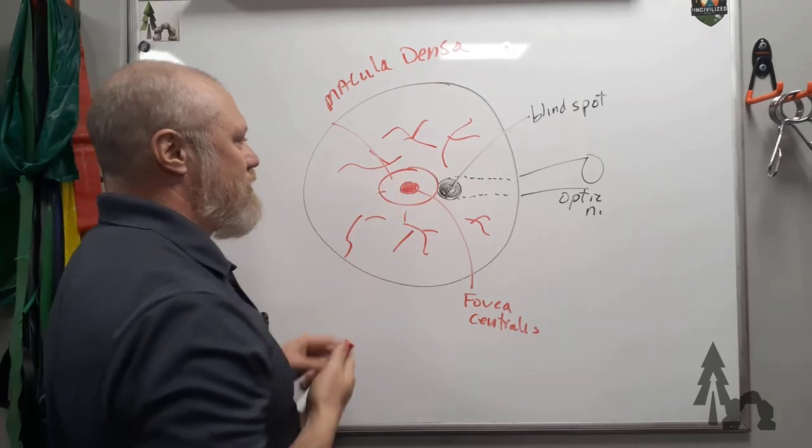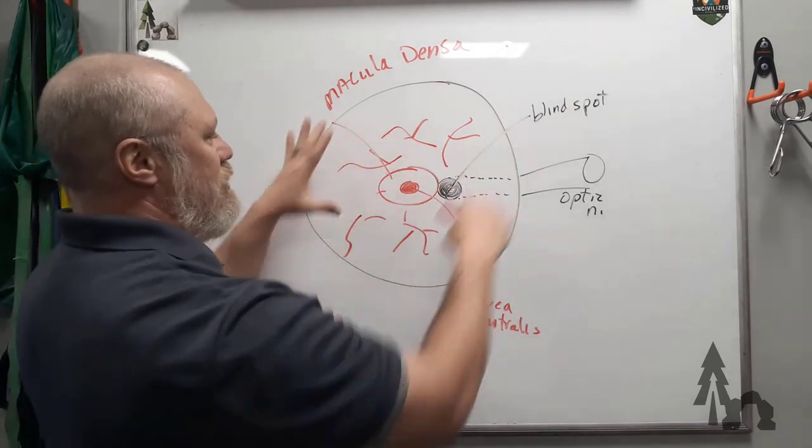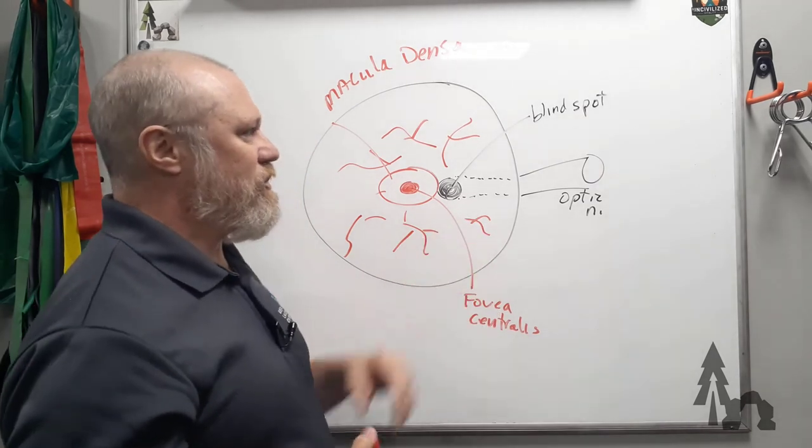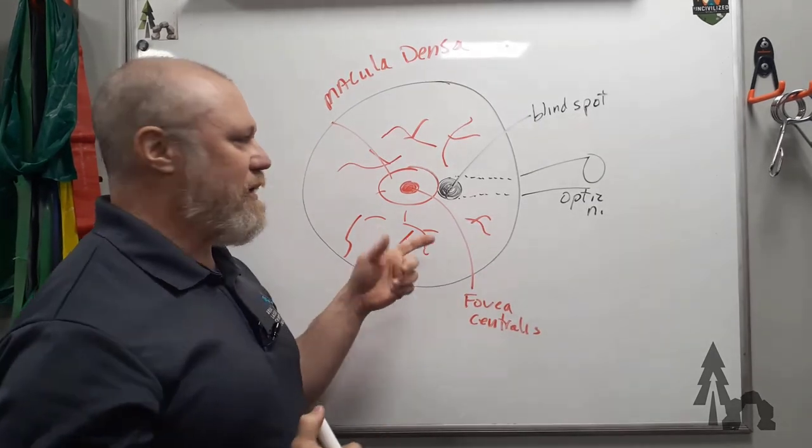Which is in that area, high concentration of cones and then rods as you go out. We'll go into that maybe in another more detail-oriented video, like a neuro series or something. We'll talk about the cranial nerves individually.